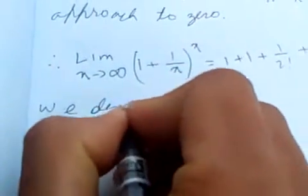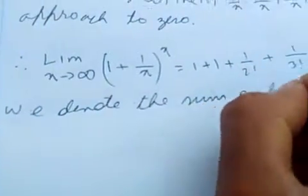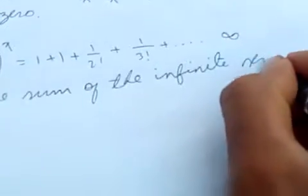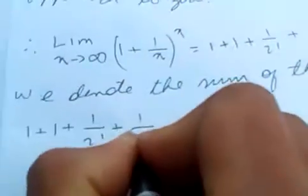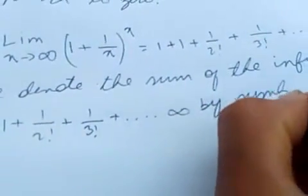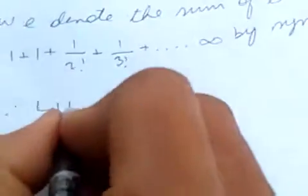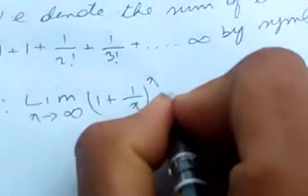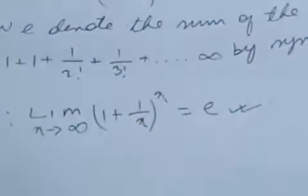We denote the sum of this infinite series as: 1 plus 1 plus 1 over 2 factorial plus 1 over 3 factorial, and so on, which by definition is the symbol e. Therefore, the limit as x tends to infinity of (1 + 1/x) to the power x is equal to e.